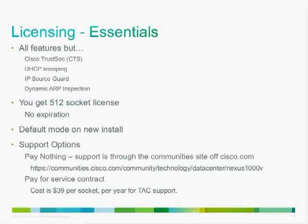In version 2.1, Cisco made a huge licensing change, creating two versions: Essentials (free) and Advanced (licensed). The Essentials version only omits four features: Cisco TrustSec support, DHCP snooping, IP source guard, and dynamic ARP inspection. Every other feature and all the scale is available in the free Essentials version. You get a 512-socket license with no expiration date, supporting essentially 64 four-socket hosts. This is the default mode on a new install, and upgrades to future versions like 2.2 are also free.